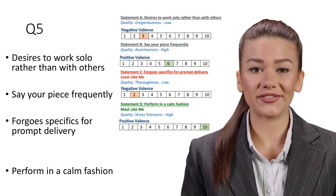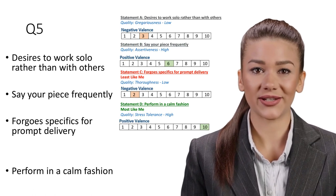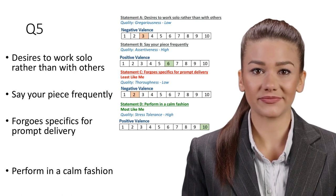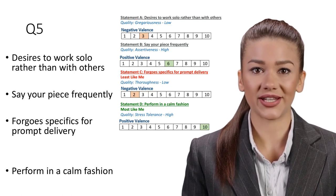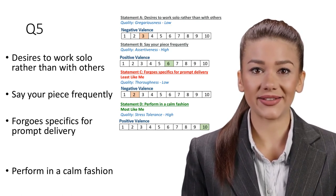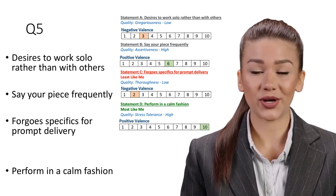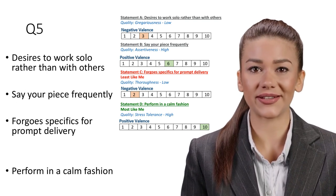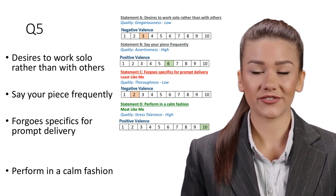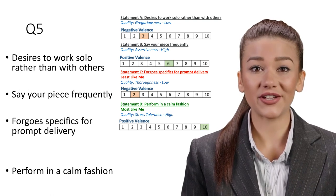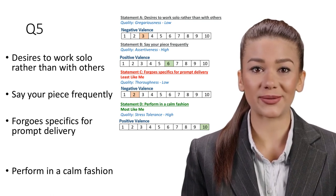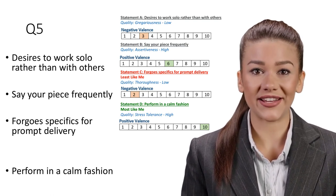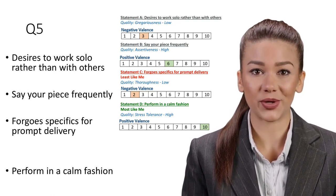Question 5. Statement A: Desires to work solo rather than with others. Quality: Gregariousness, Low. Being able to work alone is a soft skill that many companies seek in a candidate. This implies that whether you are working remotely or in a standard office environment, you capably work on your own when expedient. Being competent in working alone is very different from preferring it; this is often not desirable in the collaborative work environments typical of modern businesses. Being gregarious, this statement, is also a highly valued trait which will be allocated points in other questions.